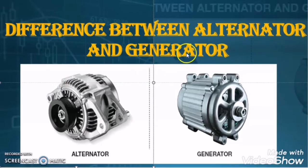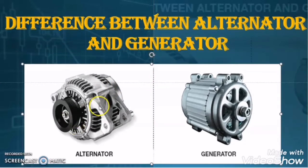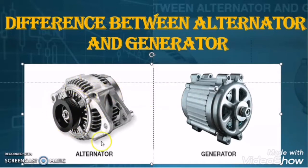The confusion is very obvious as both are using mechanical energy as an input and delivering electrical energy as an output. The working principle of alternator and generator is also the same — that is Faraday's law of electromagnetic induction. Construction-wise, both the alternator and generator have armature and field winding. So there are many similarities between alternator and generator.